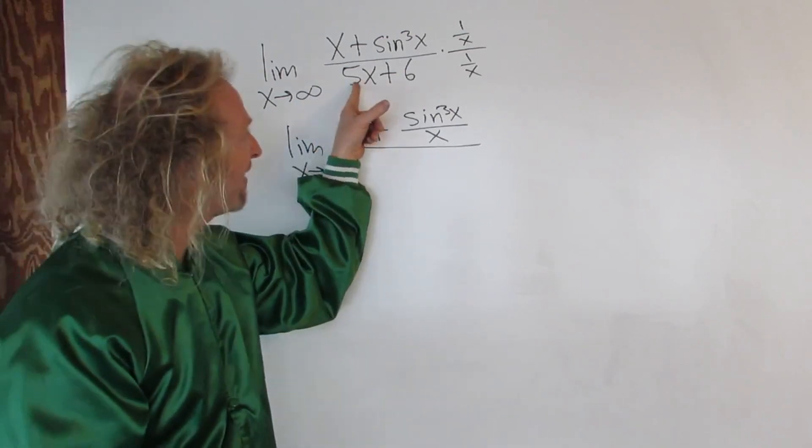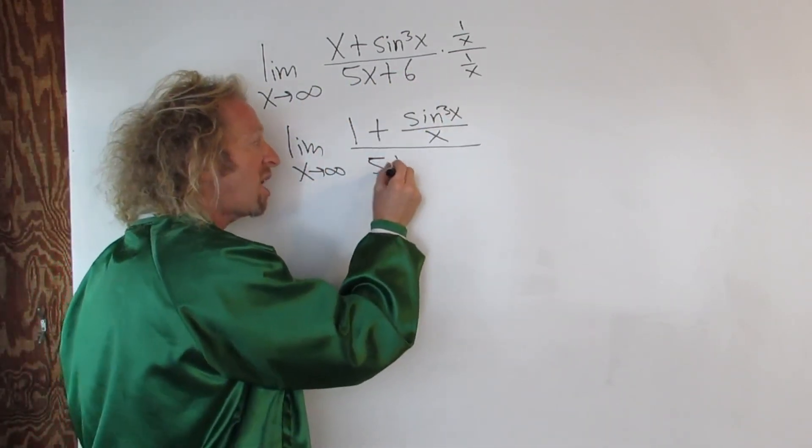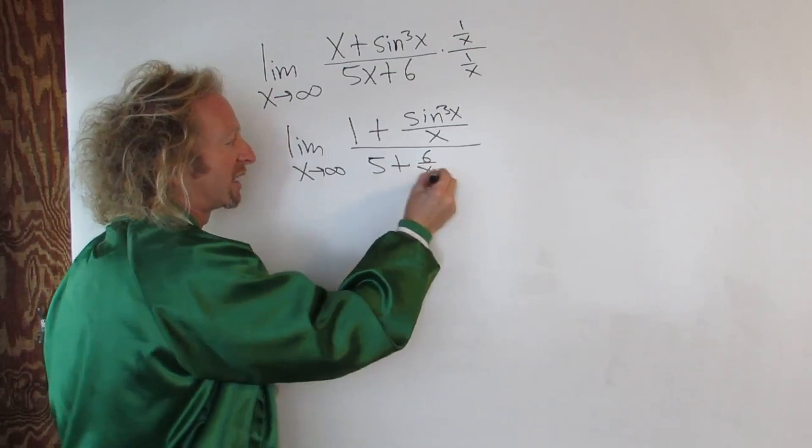And then same thing here, right? 5x times 1 over x is 5. Plus, and then 6 over x.